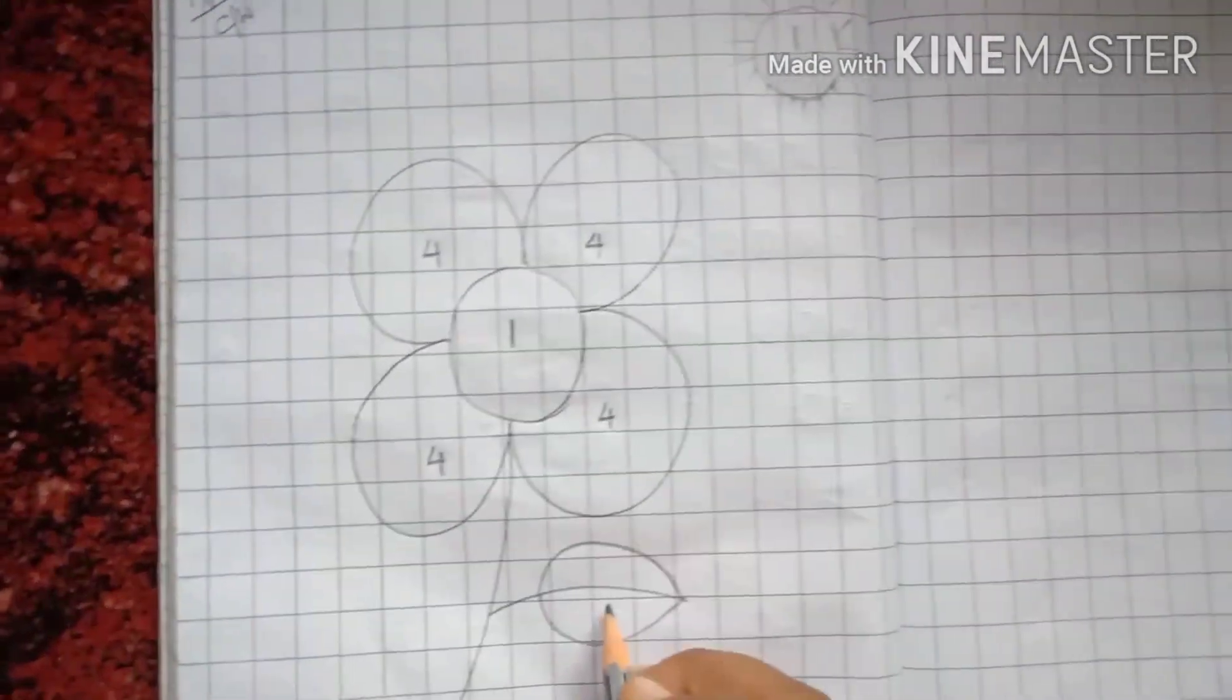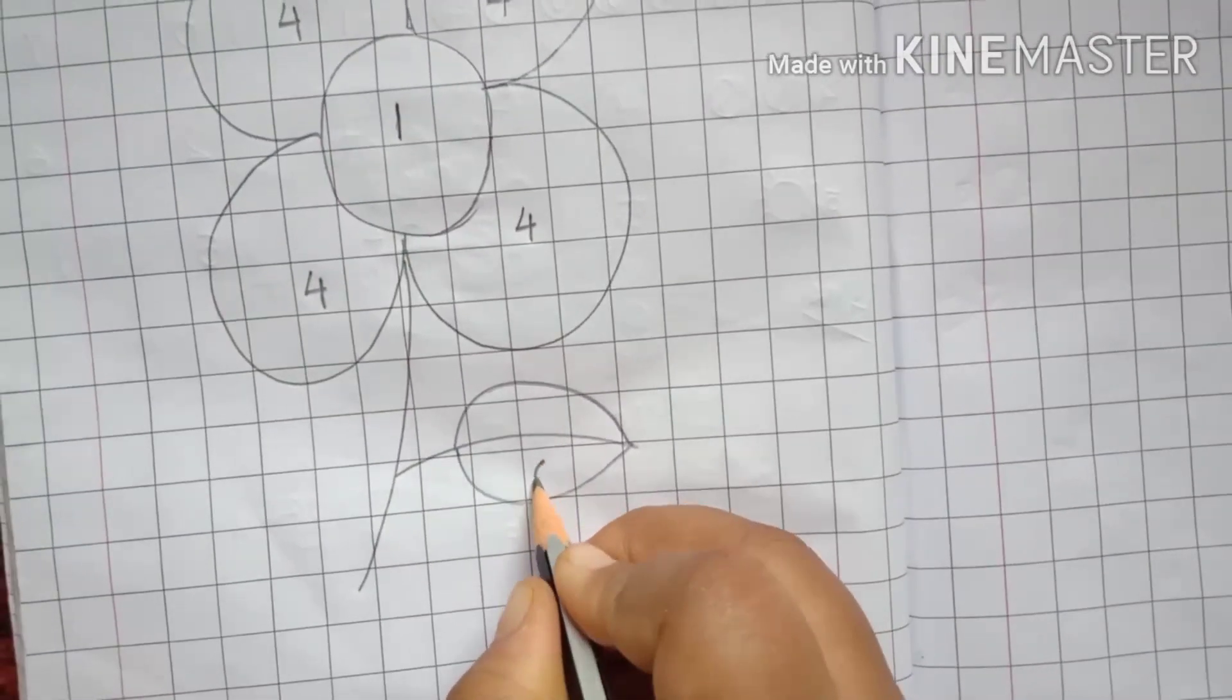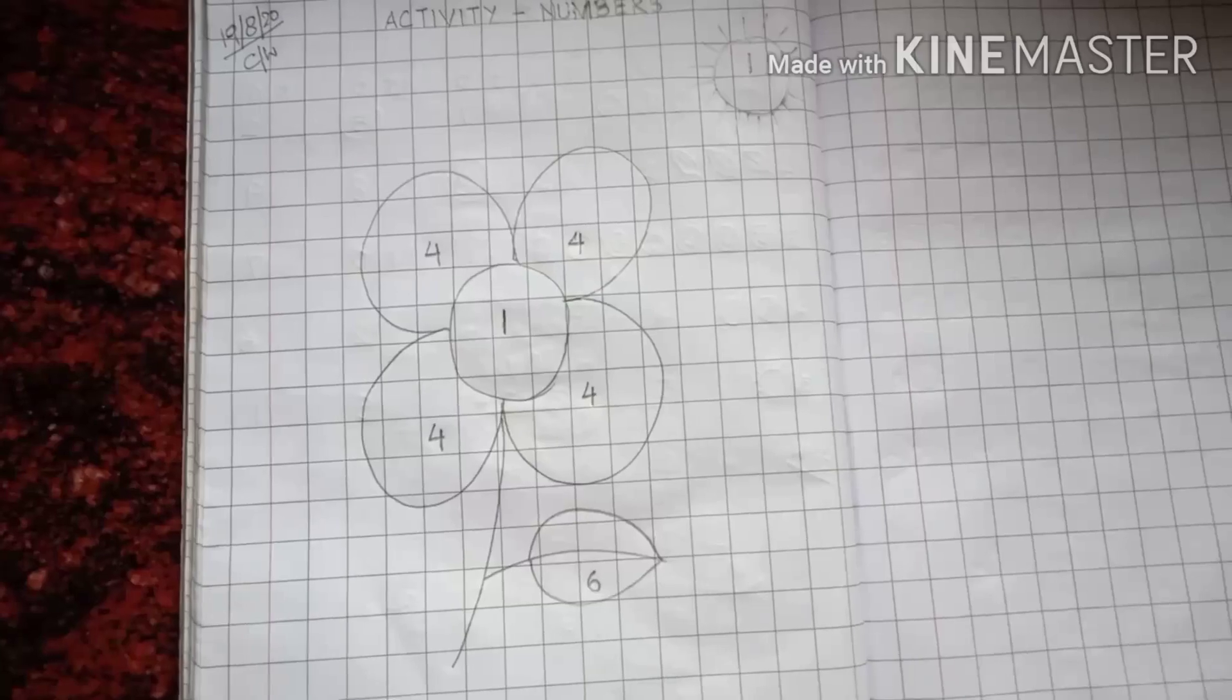Let's see. Now, I will give a number to the leaf. This is number 6. Alright.